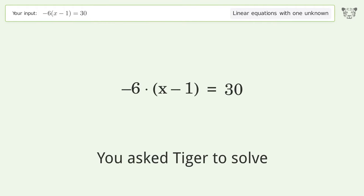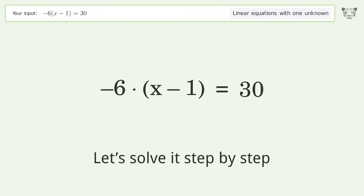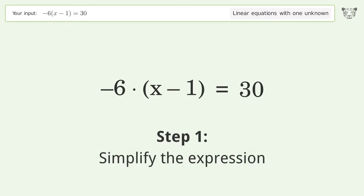You asked Tiger to solve this problem dealing with linear equations with one unknown. The final result is x equals negative 4. Let's solve it step by step and simplify the expression.